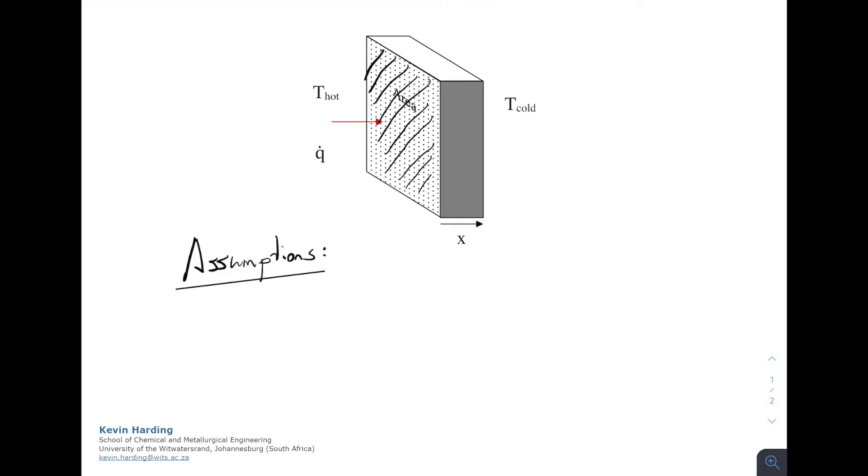There are some assumptions we need to make. First, the hot temperature T hot is the same across all of the area, so we only have heat flowing from left to right and not in three dimensions. Next, we use the area perpendicular to the flow of heat, and X is the direction through the slab from left to right.